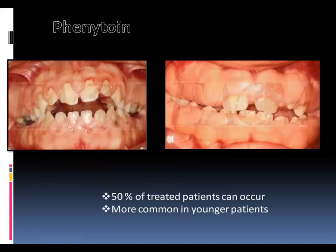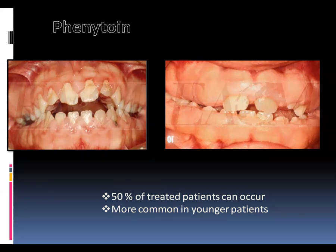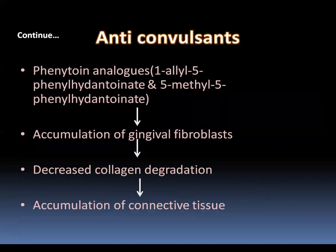In phenytoin-induced enlargement, 50% of people taking phenytoin will have this type of growth, and it is more common in younger patients since epilepsy is seen at a very young age. The mechanism involves particular fibroblasts in 50% of patients that lead to more development of collagen fibers, along with less destruction of collagen tissue. Because of more collagen production and less destruction, there is more connective tissue in the gingiva, leading to tissue growth.